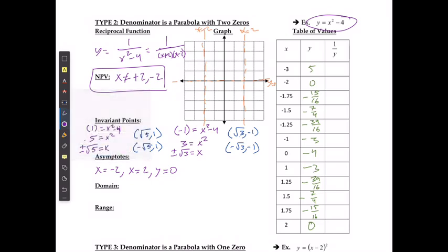For my reciprocal function I'm going to get: positive 1/5, undefined, negative 16/15, negative 4/7, negative 16/39, negative 1/3, negative 1/4, negative 1/3, negative 16/39, negative 4/7, negative 16/15, and undefined.